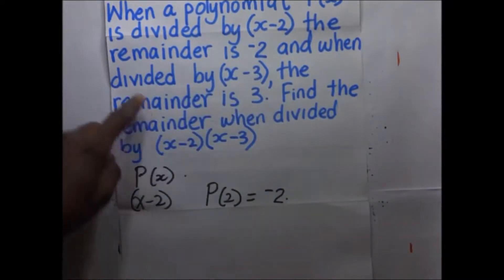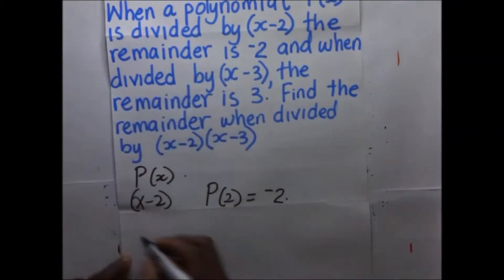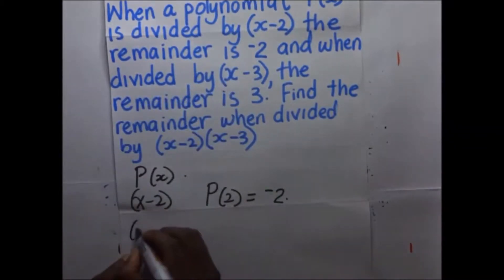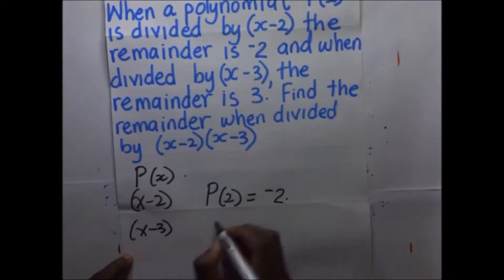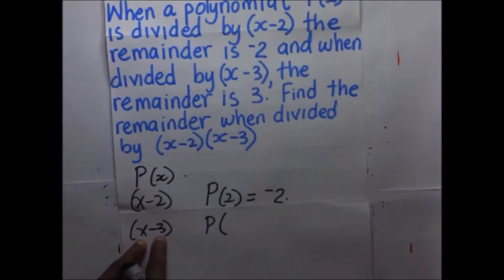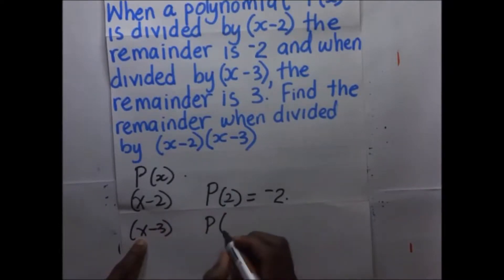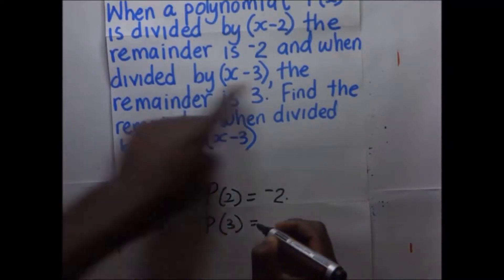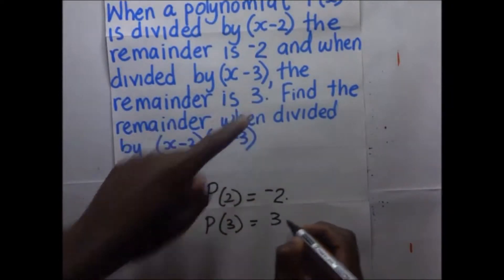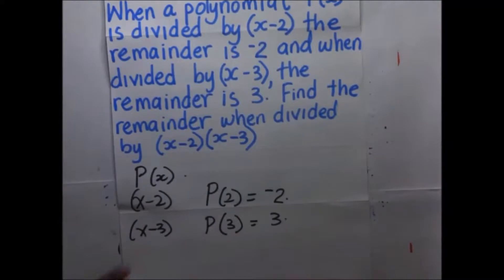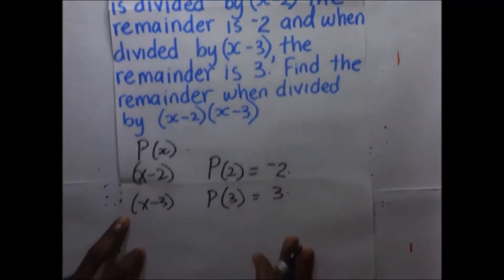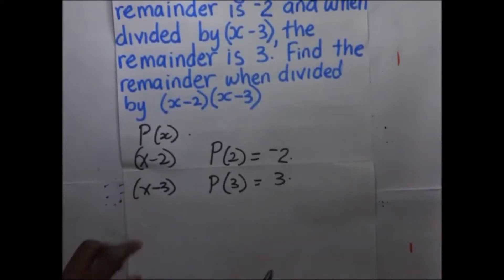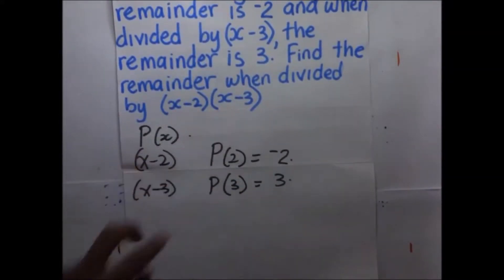And when it is divided by X minus 3, it means that P of 3 — when the value of X is 3 — is going to equal the remainder, which is 3. So they are asking us to find the remainder when it is divided by that product.